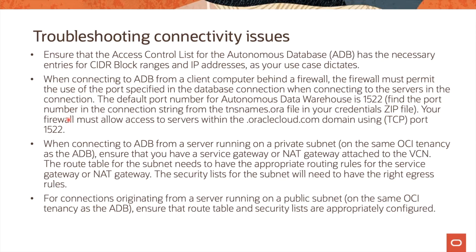When connecting to autonomous database from a server running on a private subnet, ensure that you have a service gateway or NAT gateway attached to the VCN. The route table for the subnet needs to have the appropriate routing rules for the service gateway or NAT gateway, and the security list for the subnet needs to have the right egress rules. For connections originating from a server running on a public subnet, ensure that the route table and security list are appropriately configured.